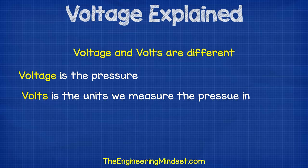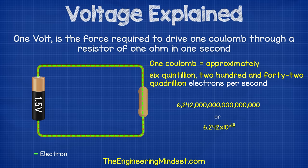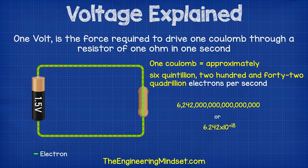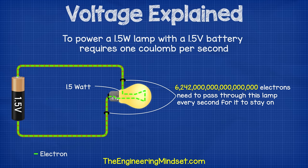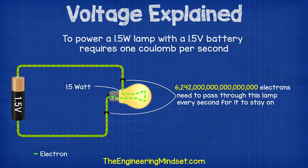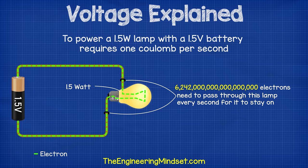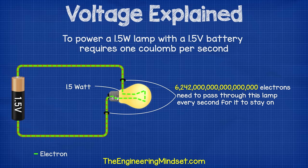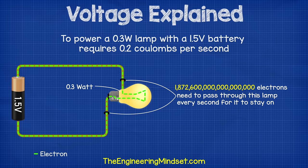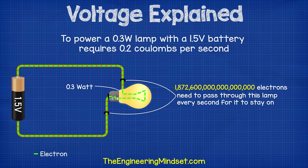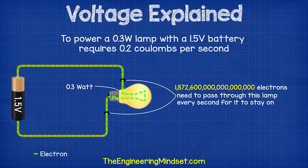So we saw earlier that voltage and volts are different. Voltage is pressure, and volts is the unit of measurement. So what does one volt mean? One volt is required to drive one coulomb, or approximately 6,242,000,000,000 electrons, through a resistance of one ohm in one second. That's still a little confusing. So another way to explain this is that, to power this 1.5 watt lamp with a 1.5 volt battery, would require one coulomb, or 6,242,000,000,000 electrons, to flow from the battery and through the lamp every second for it to stay on. To power this 0.3 watt lamp with a 1.5 volt battery, would require 0.2 coulombs, or approximately 1,872,600,000,000,000 electrons, to flow from the battery and through the lamp every second for it to stay on.